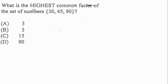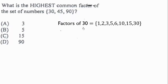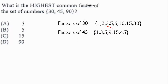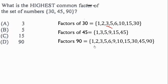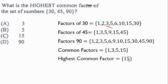Question 8: what is the highest common factor of 30, 45, and 90? The factors of 30 are 1, 2, 3, 5, 6, 10, 15, and 30. The factors of 45 are 1, 3, 5, 9, 15, 45. The factors of 90 include those as well. The common factors are 1, 3, 5, and 15, so the highest common factor is 15.